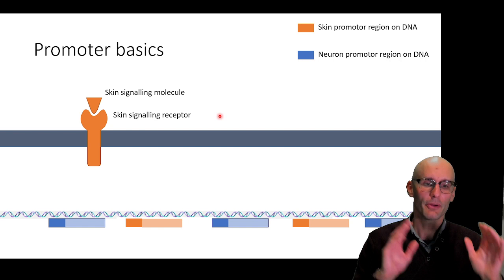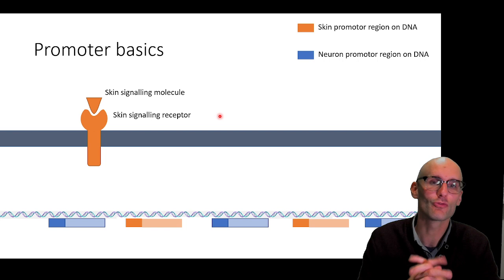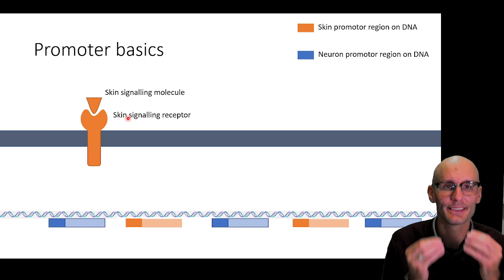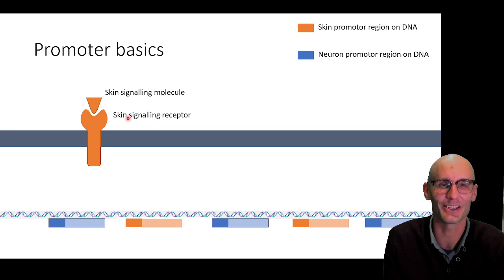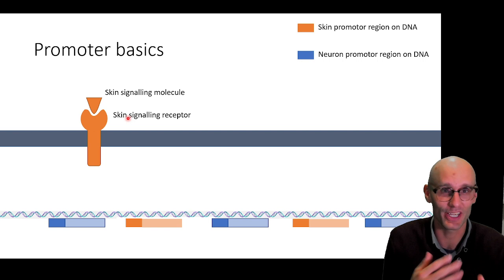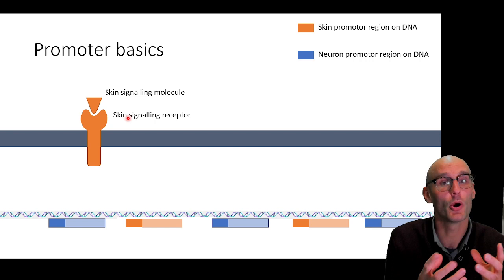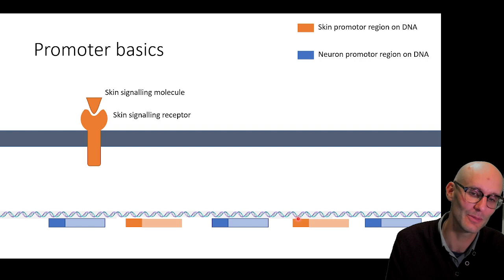To understand what they're inserting into the mouse genome we first need to have a little talk about promoters. Promoters are a small piece of DNA that's upstream from a gene that regulates the function of that gene. Your skin cells and your neurons contain the same DNA — the same set of instructions — so how could they possibly turn into different cells? One piece of this puzzle is promoters, along with other pieces like epigenetics. Promoters are a small segment of DNA upstream from the gene, and they mount a promoter protein.